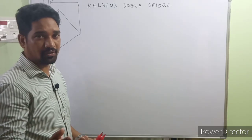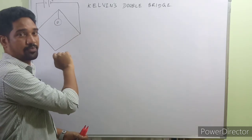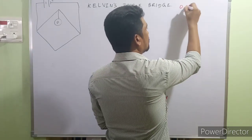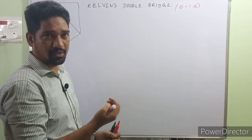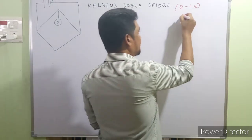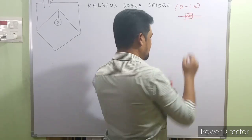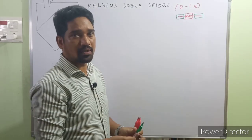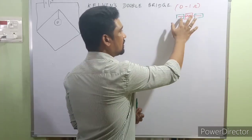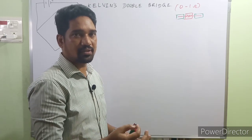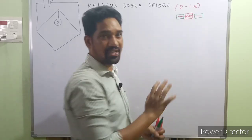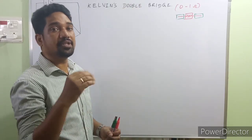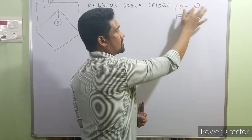So why the need of Kelvin's double bridge? It's an extension to the Wheatstone bridge. When the measurement is in the range 0 to 1 ohm, it's a very low range. While measuring unknown resistances in that range, practical resistance has connecting leads made up of a conducting metal material, introducing some significant resistance. Even these connecting leads have some resistance, which introduces significant resistance value while measuring low value resistances. The main objective of Kelvin's double bridge is to eliminate the interference of lead resistance while measuring low value resistance from 0 to 1 ohm.